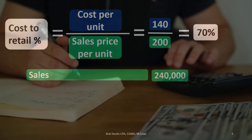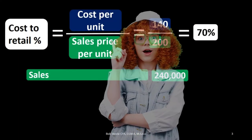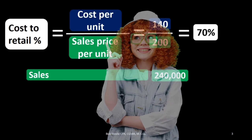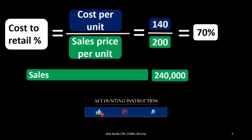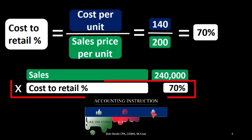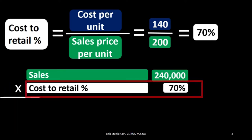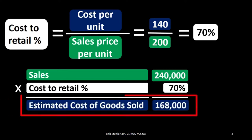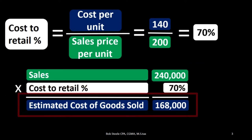If we take that number and multiply it by the total sales — remember, we know what total sales is because that's what's being recorded when we make the sales — if we multiply the total sales number by this 70% cost-to-retail percentage, then we can estimate that the cost of goods sold should be 168,000. So we know what the sales are, and we're estimating cost of goods sold based on the relationship between the cost per unit and the sales price.